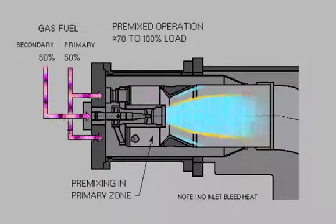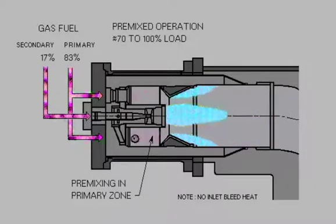In the gas fuel premix mode of operation, fuel is introduced in both the primary and secondary zones. However, notice that combustion occurs only in the secondary zone. Air and a majority of the fuel, approximately 83%, are mixed in the primary zone, but combustion only occurs in the secondary zone.